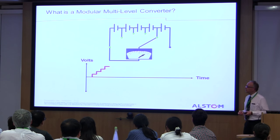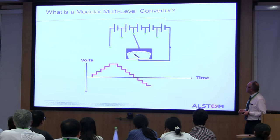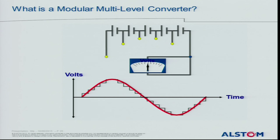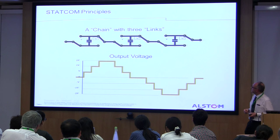What is a modular multi-level converter? Basically, we have lots of little steps connected all in series, and we build up a sine wave from those individual steps. You need surprisingly few steps to get to a sine wave with harmonic content adequate for connection to the grid. We use switches to represent the IGBTs or power semiconductors, and we can get various voltage steps by interconnecting or bypassing the capacitors.